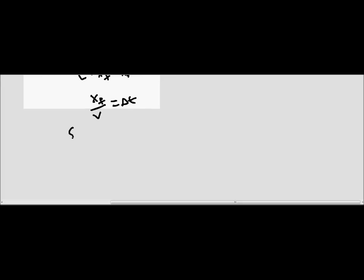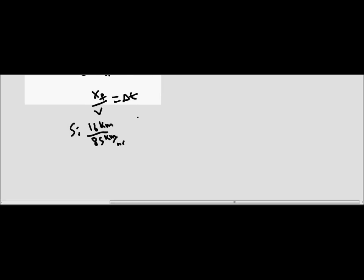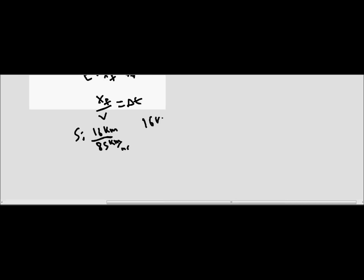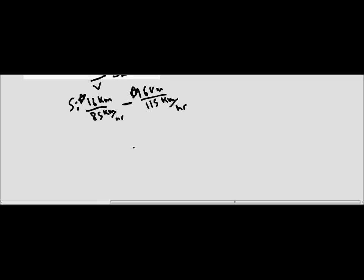When we calculate that out, we substitute in 16 kilometers divided by 85 kilometers per hour, and 16 kilometers divided by 115 kilometers per hour. Obviously the faster car is going to have a smaller time. So in order to find the time difference, we're going to take the larger number and subtract the smaller number.